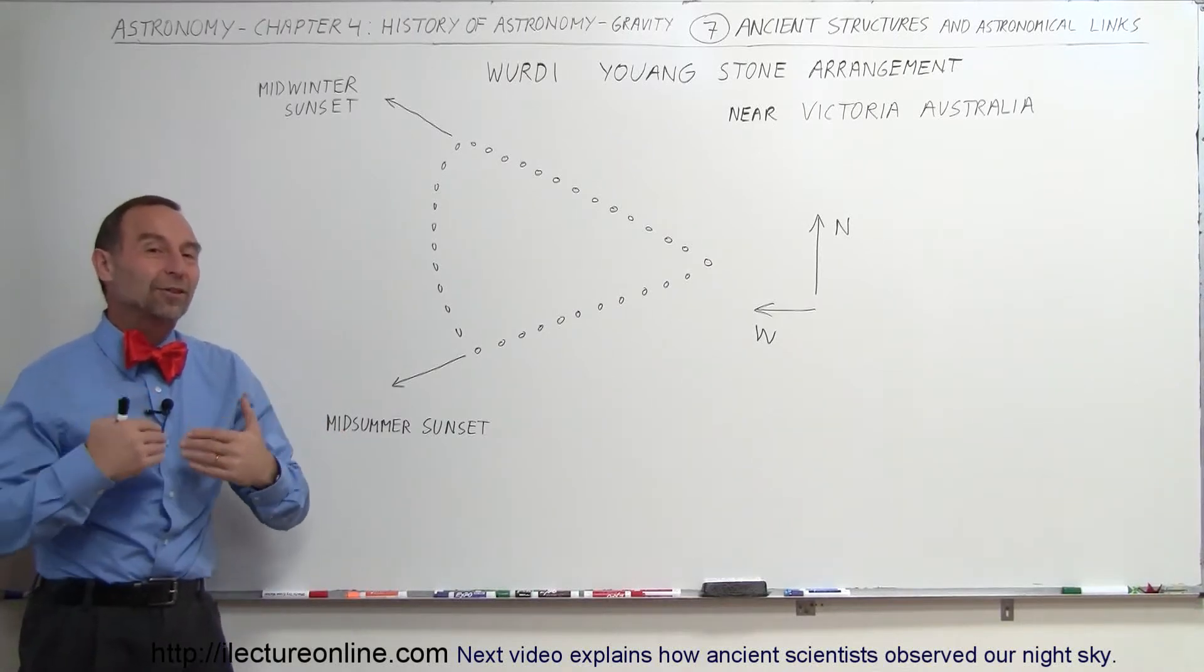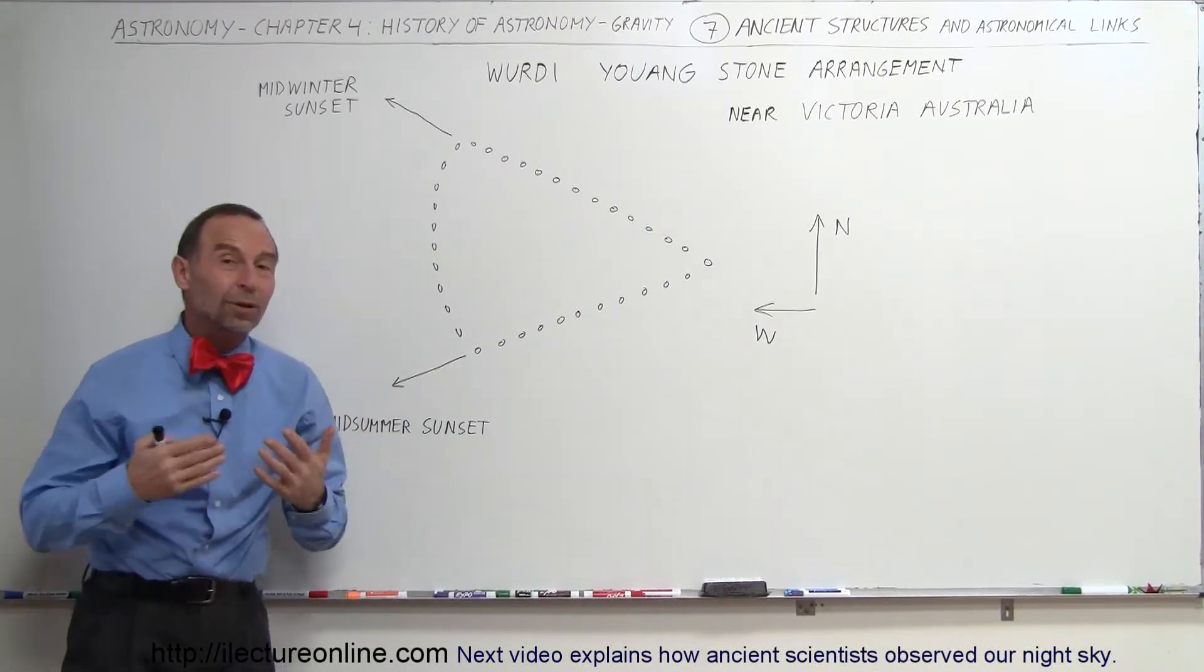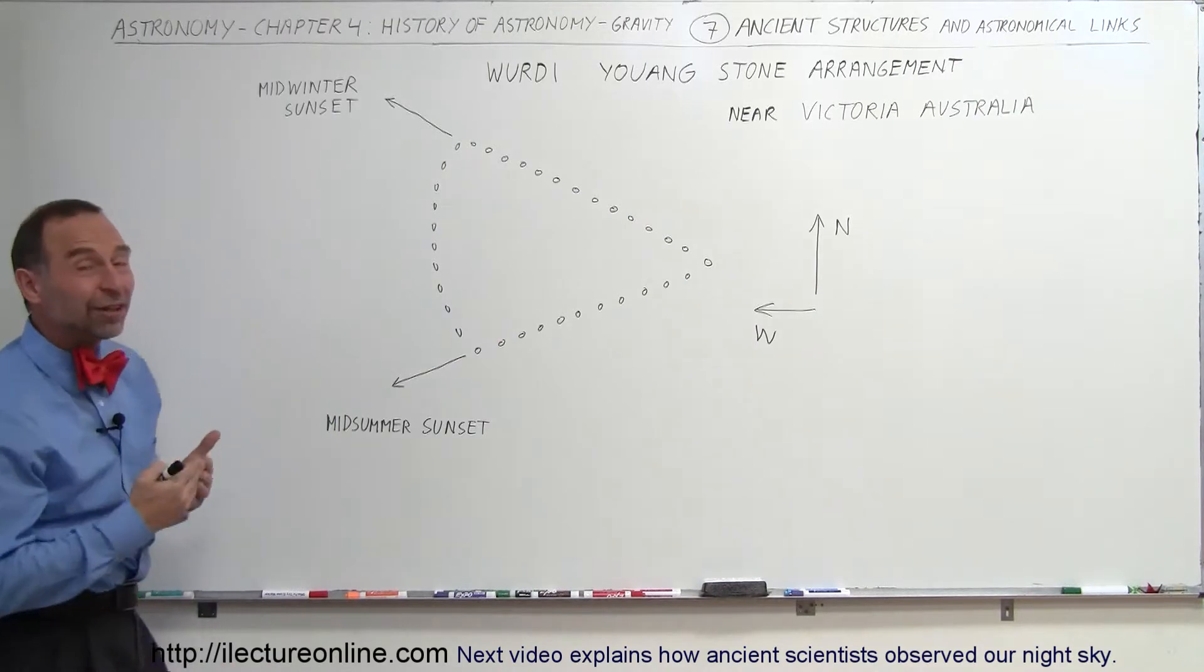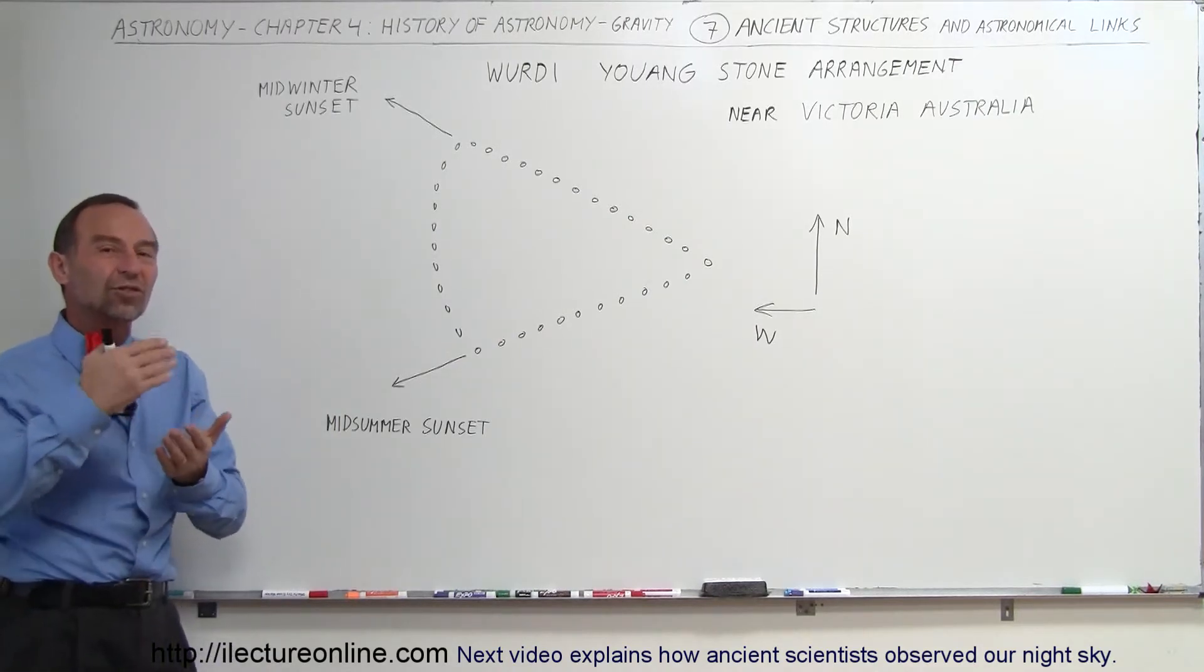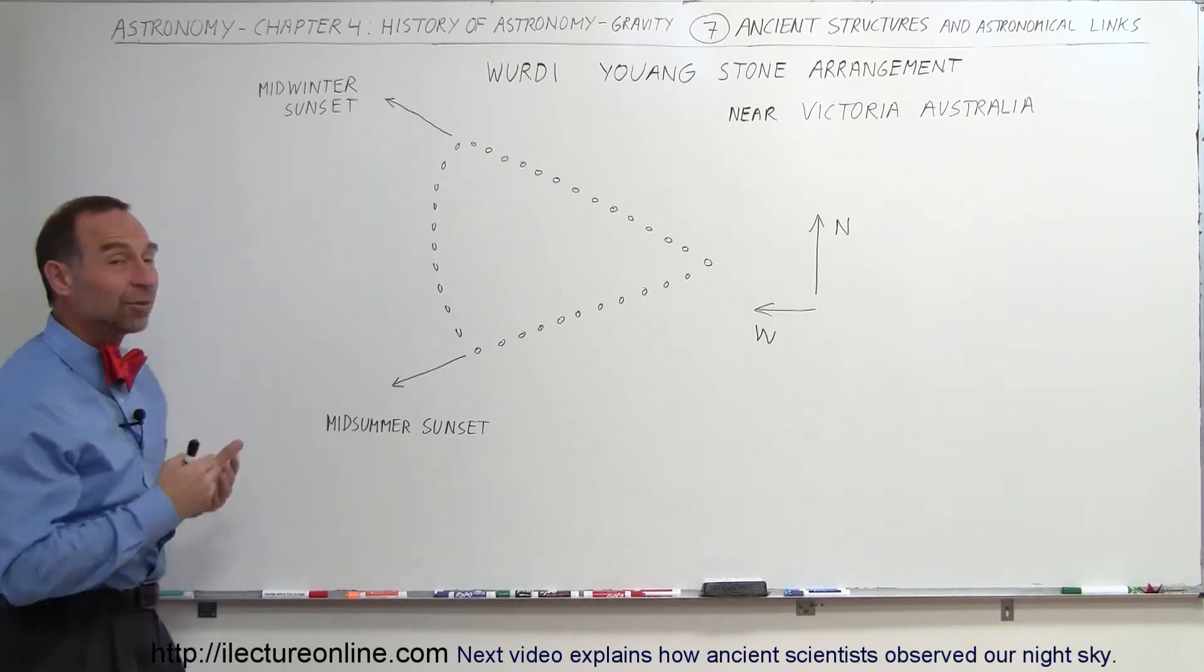Welcome to Ad Lecture Online. Now we're going to travel to Australia to see what the people who originally lived there, the Aborigines, put together to keep track of where the sun would set and rise during different times of the season.